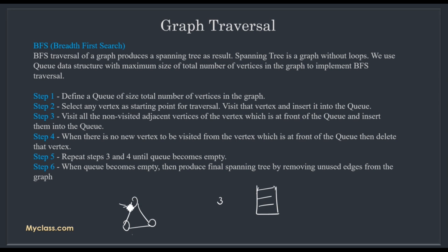We can start from any vertex in the graph. After inserting into the queue, if the queue is not empty, visit all non-visited adjacent vertices of the vertex at the front of the queue and insert them into the queue. Then delete that vertex from the front of the queue. Repeat steps 3 and 4 until the queue becomes empty. Finally, produce the spanning tree by removing unused edges from the graph.